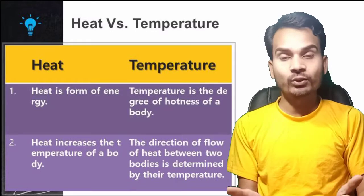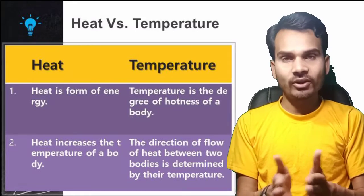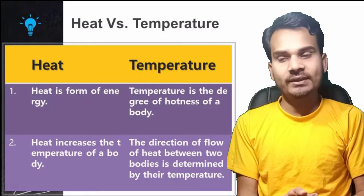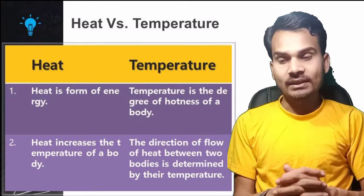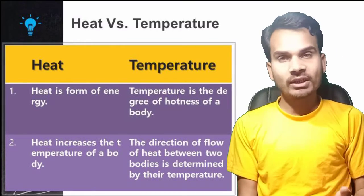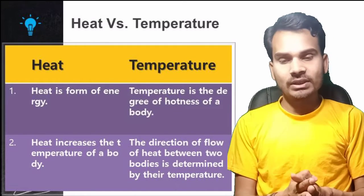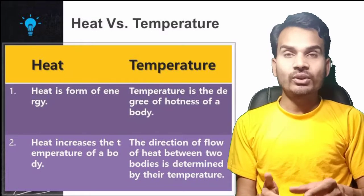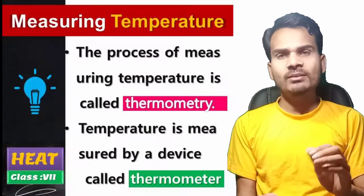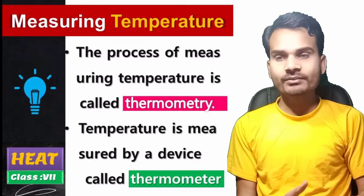Heat is a form of energy. Temperature is the degree of hotness of a body. Heat increases the temperature of the body. The direction of the flow of heat between two bodies is determined by their temperature — heat flows from the body at higher temperature to the body at lower temperature.